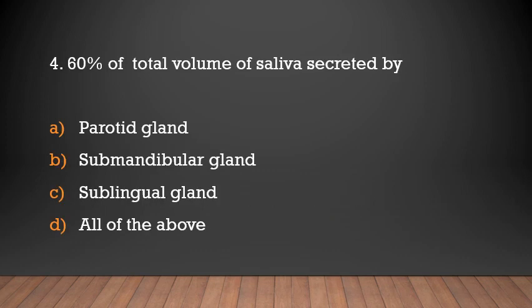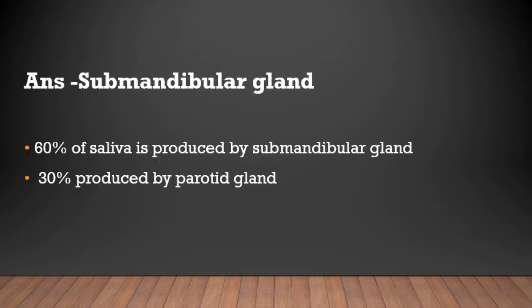60% of total volume of saliva is secreted by which gland — parotid gland, submandibular gland, sublingual gland, or all of the above? The answer is submandibular gland. 60% of saliva is produced by the submandibular gland, and 30% is produced by the parotid gland.